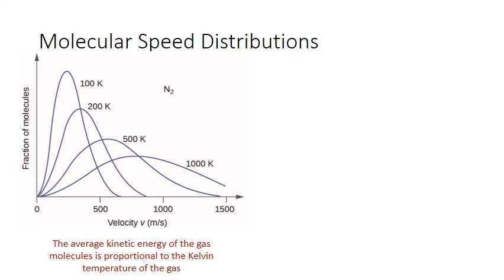We can see that in this velocity distribution chart for nitrogen gas — one gas, one molar mass, constant throughout. The main variable here is temperature. Starting with low temperatures of 100 Kelvin, associated with the highest peak curve, that peak occurs at the lowest velocities, so lower temperatures correspond to lower velocities. As we increase the temperature, the peak shifts to the right toward higher velocities, and the curve becomes more spread out but skewed toward the higher end — higher temperatures, higher velocities on average.